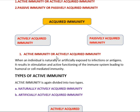Actively acquired immunity, or simply active immunity, is the immunity that an individual gets naturally or by artificially exposing to infections or antigens, resulting in immunity produced by either humoral or cell-mediated immunity. For example, after birth you may be exposed to infections like smallpox or chickenpox.